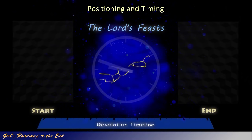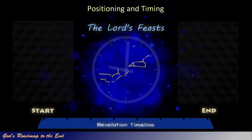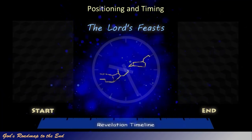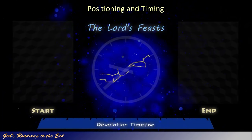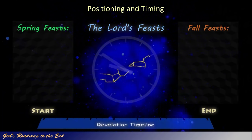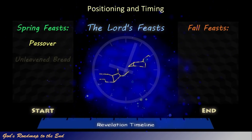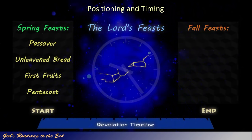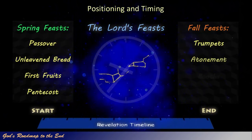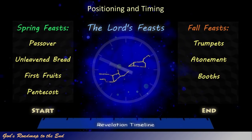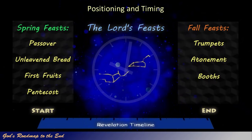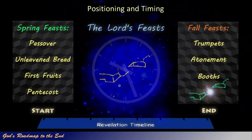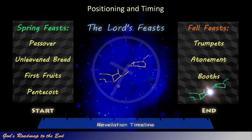There are seven feasts given to Israel to observe perpetually, found in Leviticus 23. They occur in two distinct seasons, more commonly referred to as the spring and fall feasts. The spring feasts are Passover, Unleavened Bread, First Fruits, and Pentecost. The fall season consists of the Feast of Trumpets, the Day of Atonement, and the Feast of Booths. We will demonstrate how God uses a clearly recognizable pattern applied to both seasons, and how this pattern incorporates the Revelation 12 sign into the fall feasts.